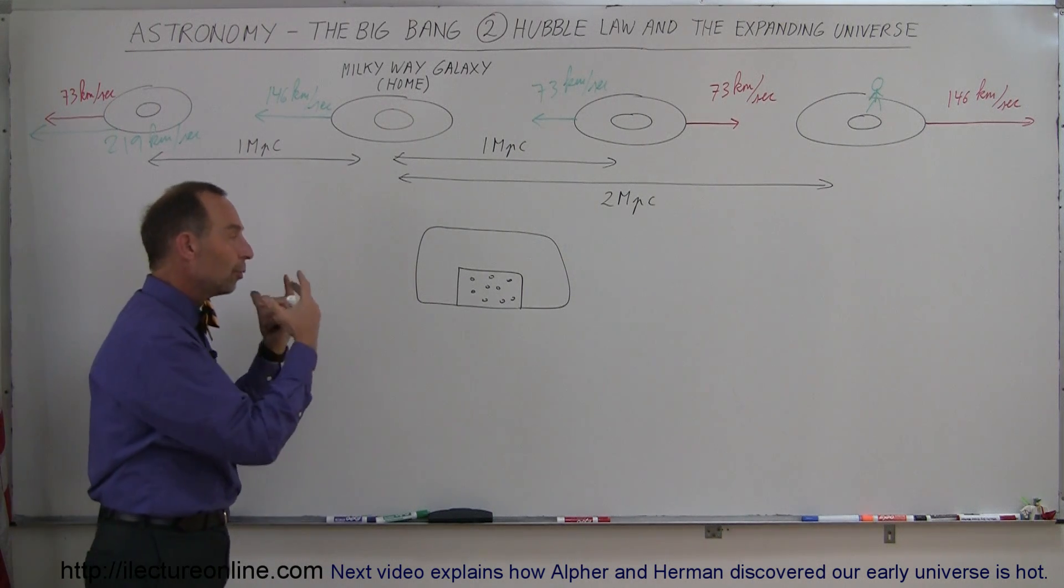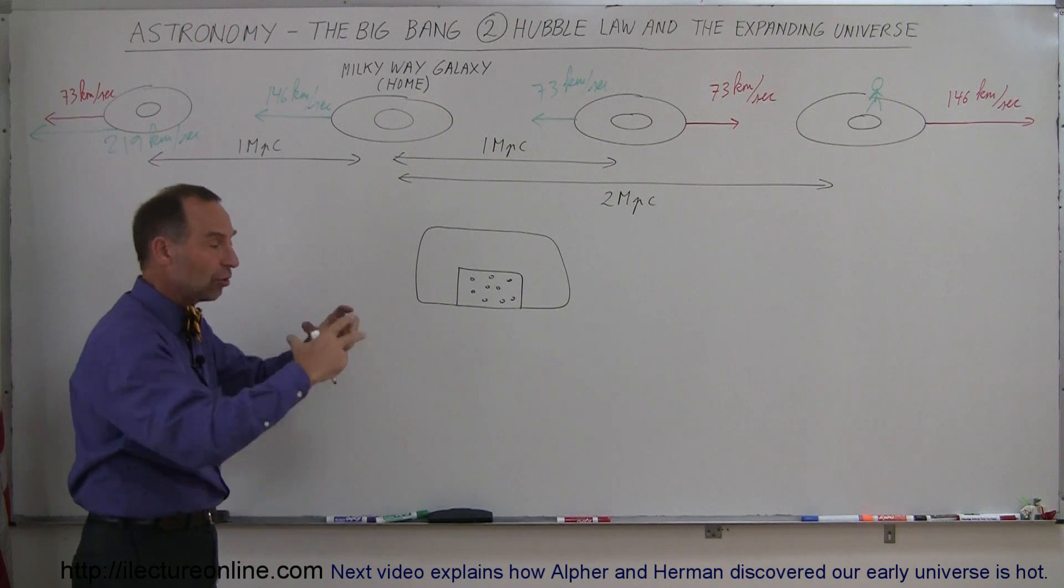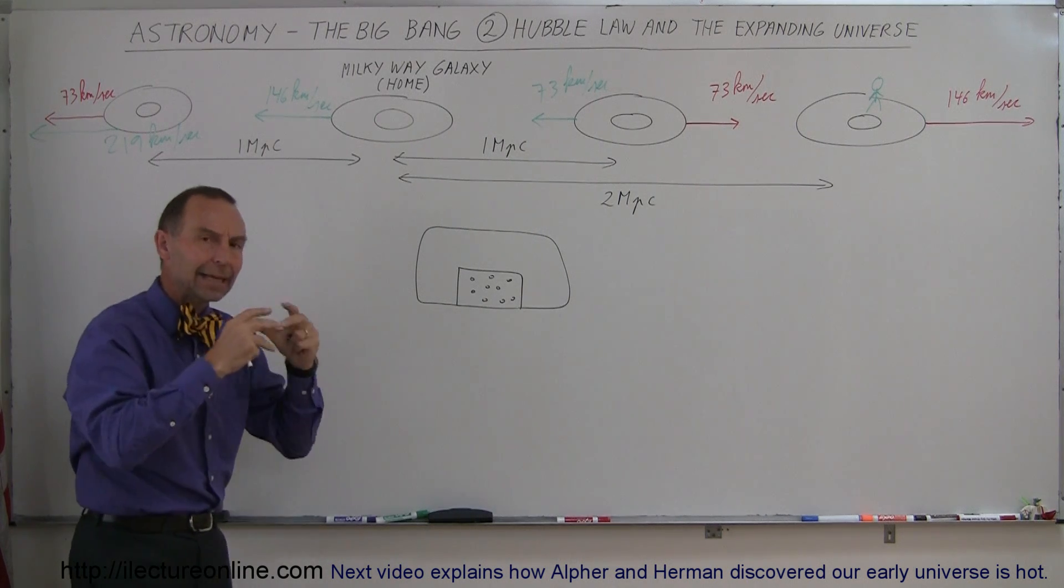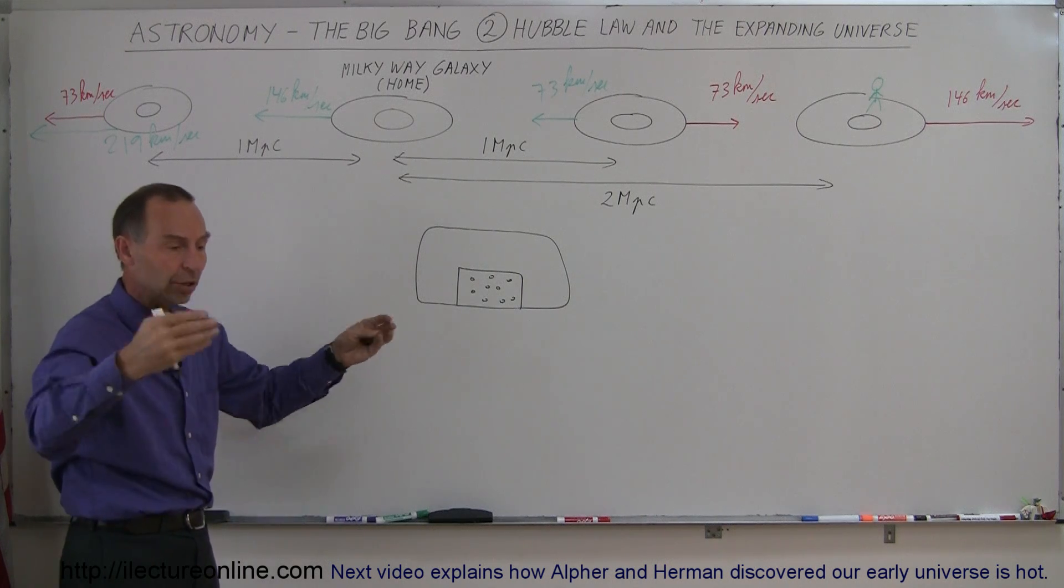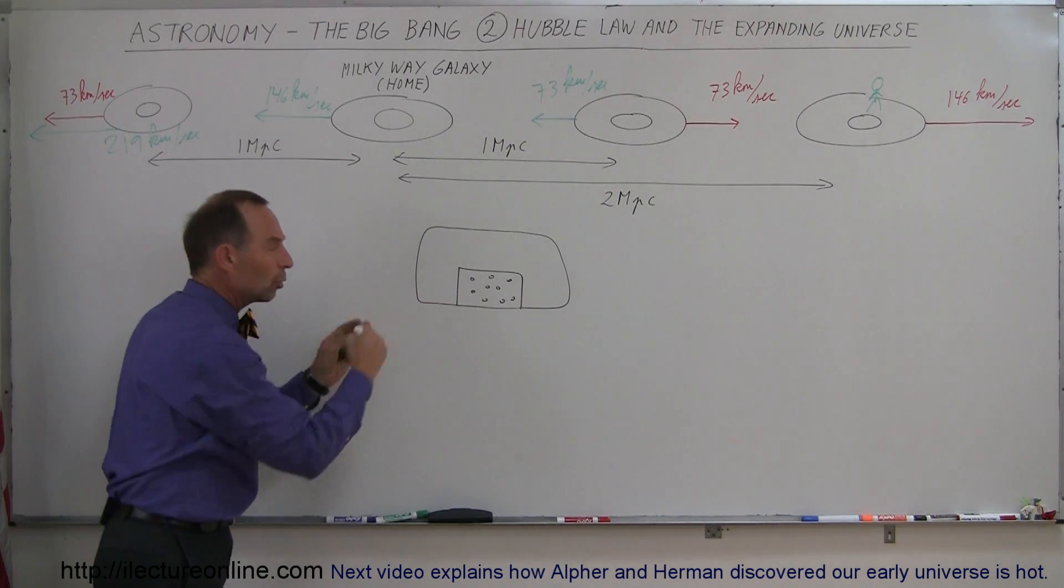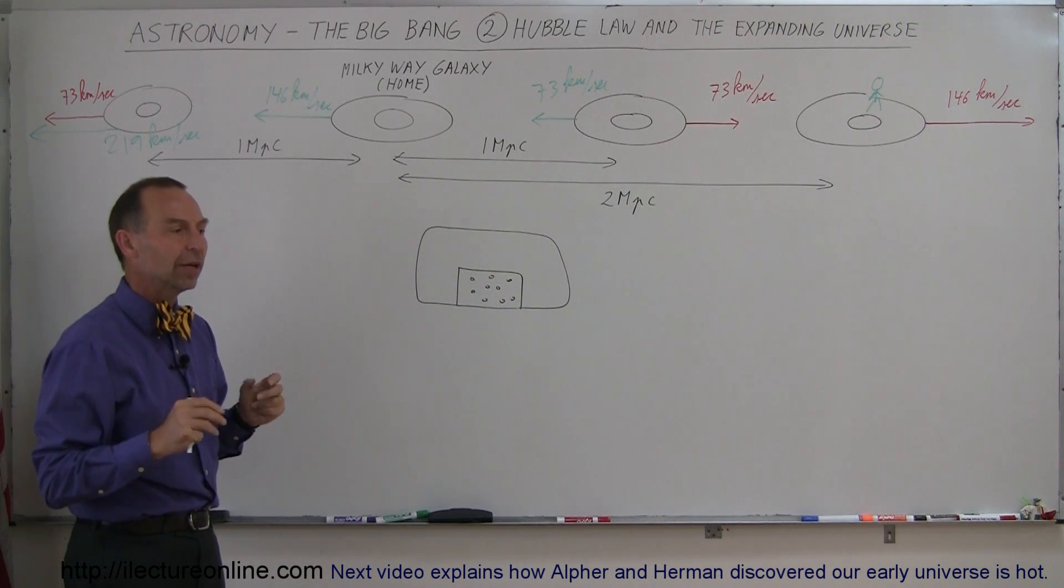So the dough in the raisin bread is kind of like the space in the universe. Space is expanding, and the galaxies are simply just going along for the ride. The farther they're apart from one another, the more space is in between, just like the more dough is in between the raisins, the faster the galaxies would be moving away from each other.